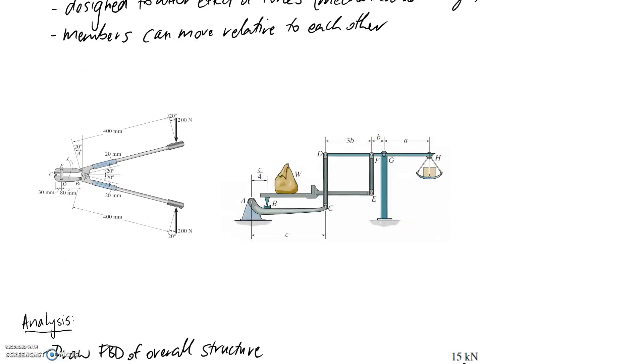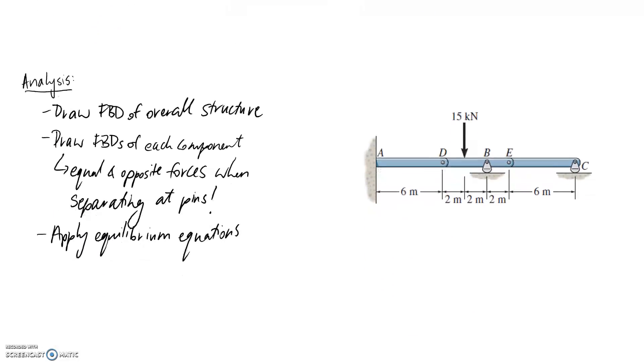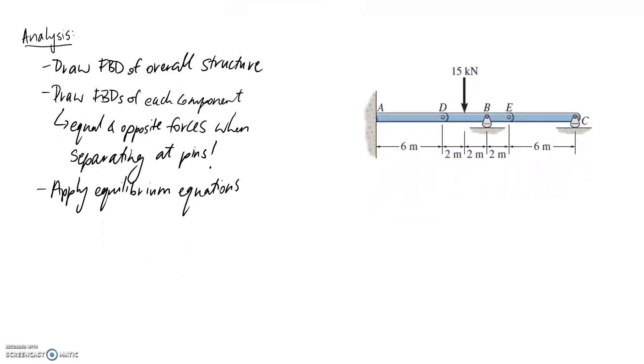So the last thing that we are going to talk about is the analysis of these frames and machines. So the first thing that we can do is if we want to, we can draw a free body diagram of the overall structure that we're interested in. So I've given an example here, and I'm going to go ahead and demonstrate.